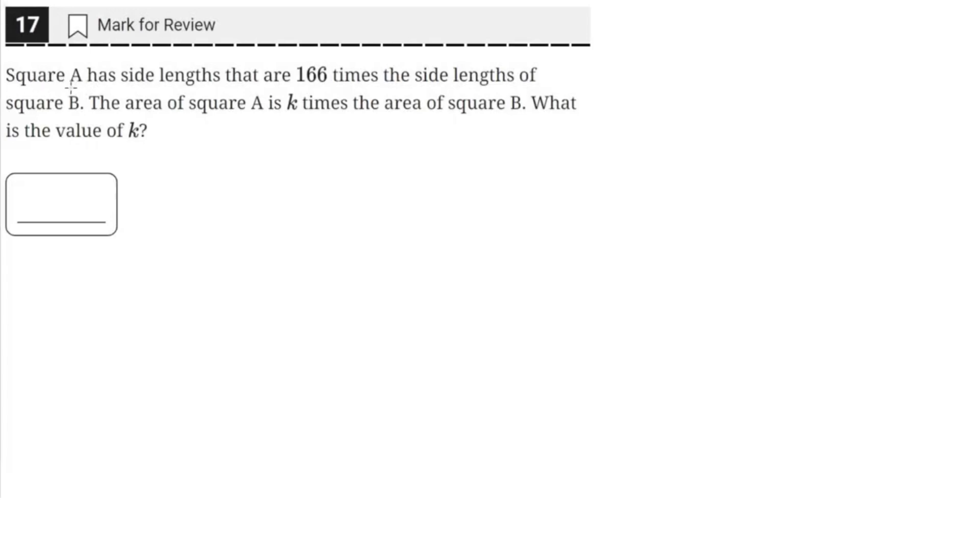Square A has side lengths that are 166 times the side lengths of square B. The area of square A is k times the area of square B. What is the value of k?